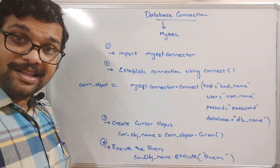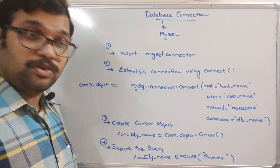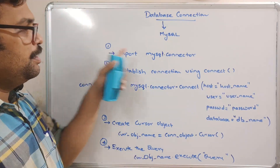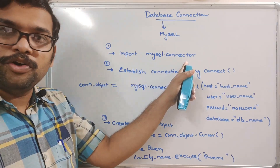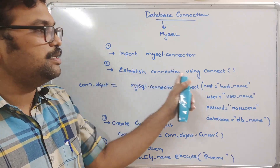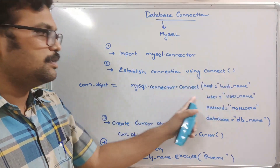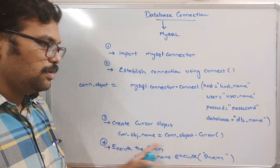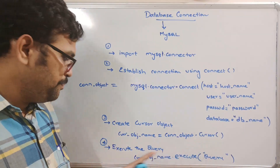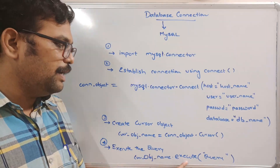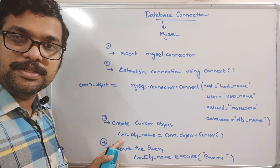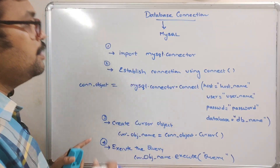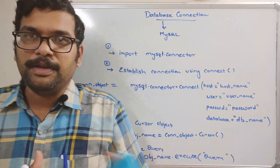In order to create a database we also write a query here. So to summarize: the first step is importing the module, the second step is establishing the connection using the connect method, the third step is creating the cursor object using the cursor method, and the fourth step is executing the query with the cursor object.